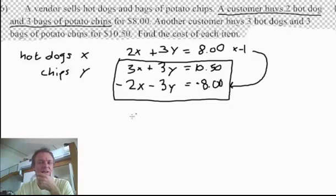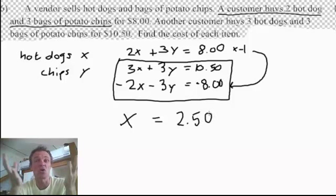So when I add these, I'm going to get one X. The Y's have gone, and that will equal 10.50 take away 8 is 2.50. And that, folks, is X, and that's the price of the hot dogs. There you go, the hot dogs at $2.50 each.